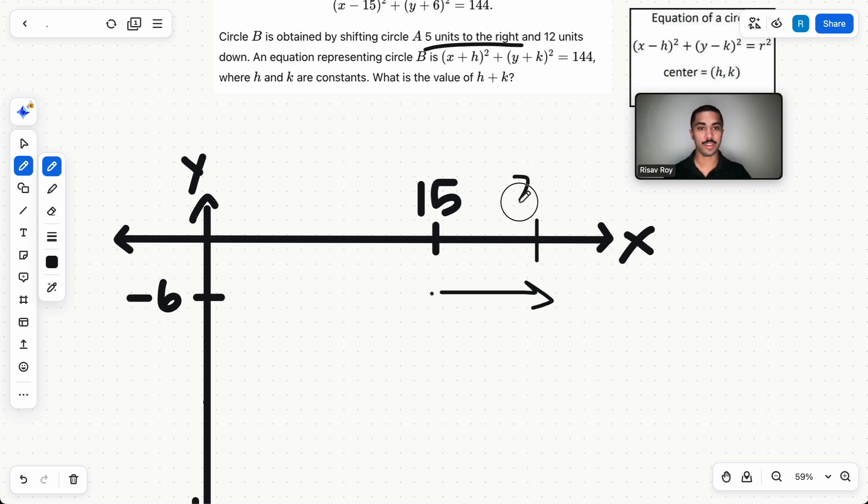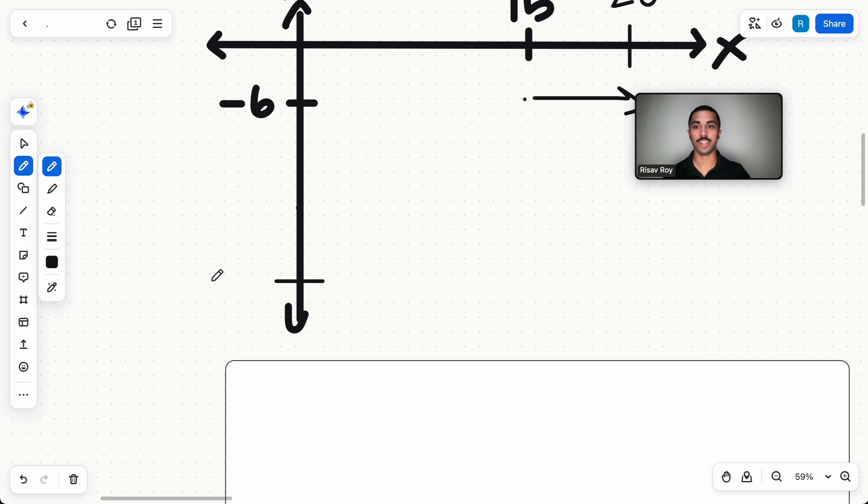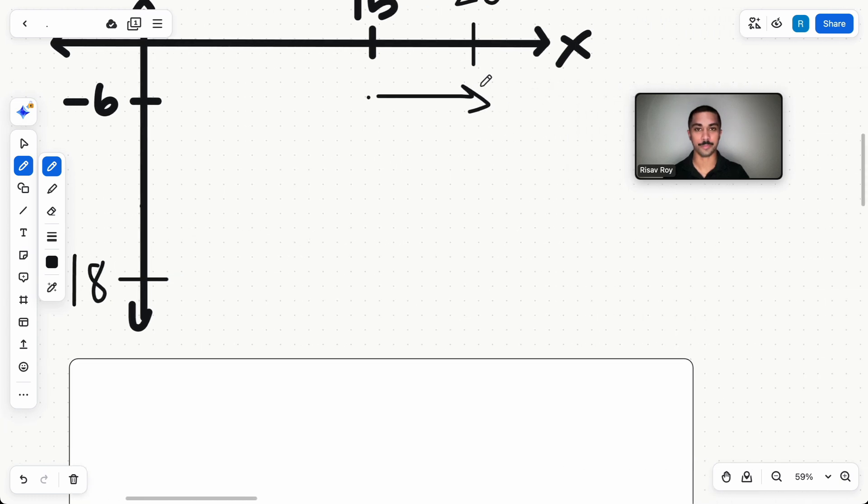We're going to shift to the right five units. That's what it says right here. Okay, so we'll end up at 20 for x, and we're shifting 12 units down. So this is going to be -18, right? Because -6 - 12 is -18. This is going to be our new center. This is going to be the center for B. This is the center for A. This is the center for B.